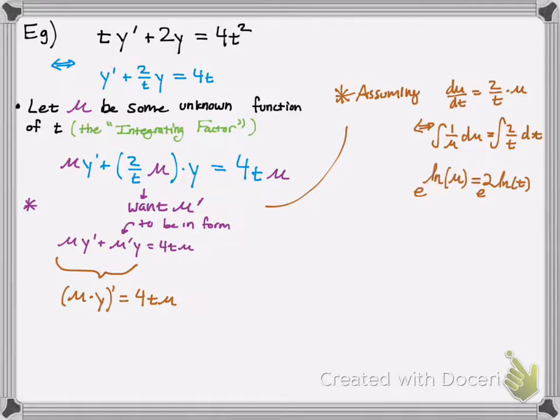Remember, integral of 1 over mu is ln of mu. And there's no plus c here, because we need one solution, so we can just set c equal to 0. And then we solve for mu, and we get it is equal to t squared. So that's mu, and that's our integrating factor. But remember, we also have mu prime in there, so the derivative of that would just be 2t.